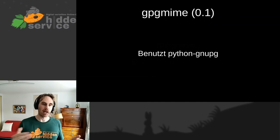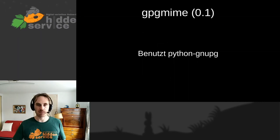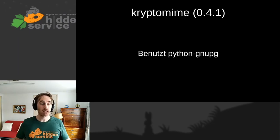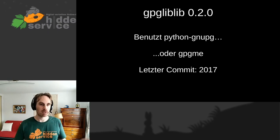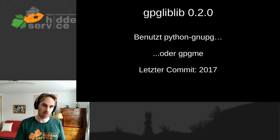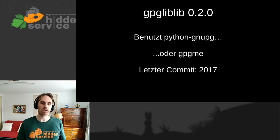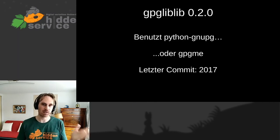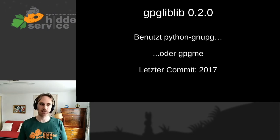GPG MIME uses Python GNUPG, the very old module that has all these problems, and I don't actually want to use that. CryptoMIME is basically the same. GPGlip is interesting — it can use Python GNUPG or GPG MIME, which was the name the official Python bindings for GPG had before being renamed at the very last minute. The last commit is 2017, and it doesn't look like it would work together with the current GPG. At that point I decided that's not something I will look into in detail.